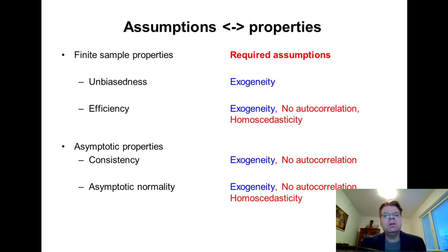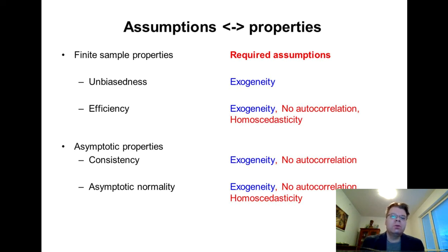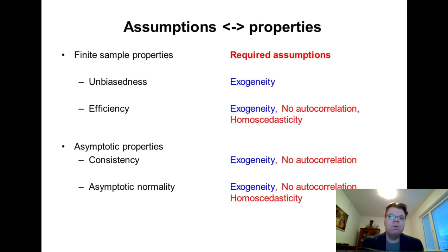Recall from the discussion of statistical properties that the exogeneity condition, or zero conditional mean assumption, was really required for all of the properties — including finite sample properties such as unbiasedness and efficiency, but also asymptotic properties such as consistency and asymptotic normality. So the exogeneity condition was critical to ensure all of those properties. All of the nice properties of the OLS estimator fly out of the window if the exogeneity condition is violated. This is why it is important to not just memorize the assumptions but also understand their role and how serious the problems will be if an assumption is not satisfied.